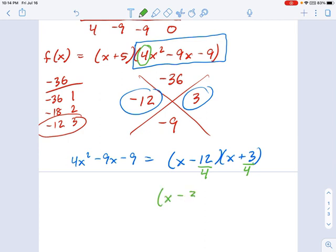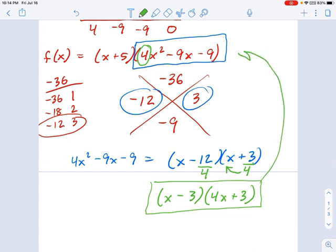And let's rewrite this. 12 over 4. That's 3. And 3 over 4 is not reducible. So I take that 4 and I bring it over in front of the x. So it becomes 4x plus 3. And I'm going to pause this right here. I want you to go ahead and confirm that this is the correct factoring for this polynomial right here, 4x² - 9x - 9. Now, having done that, let's move on.